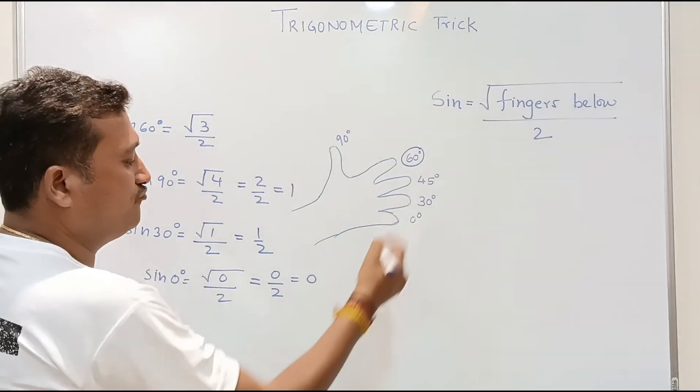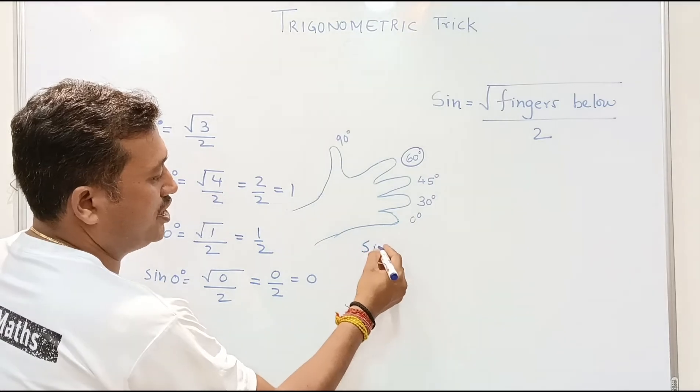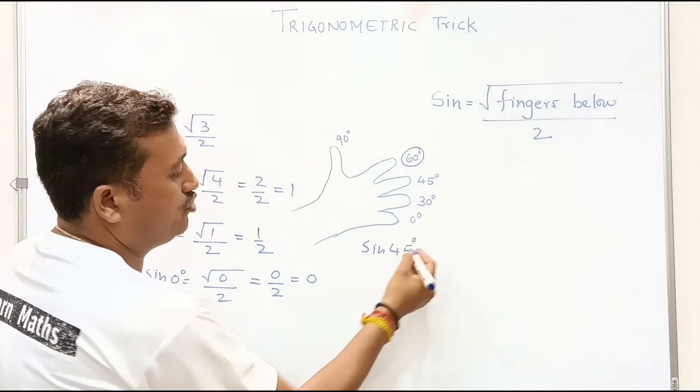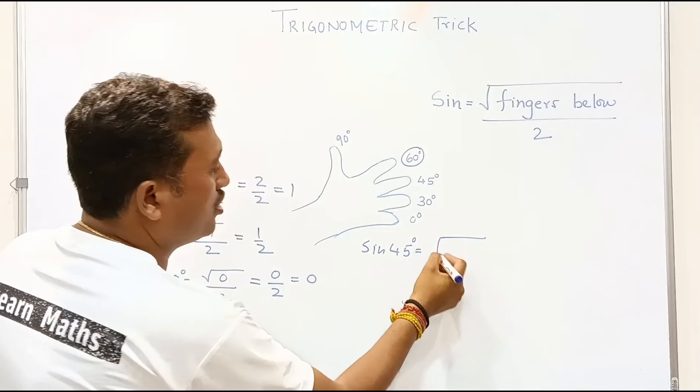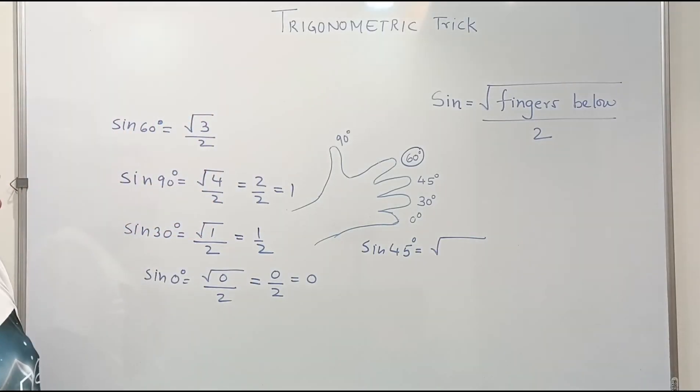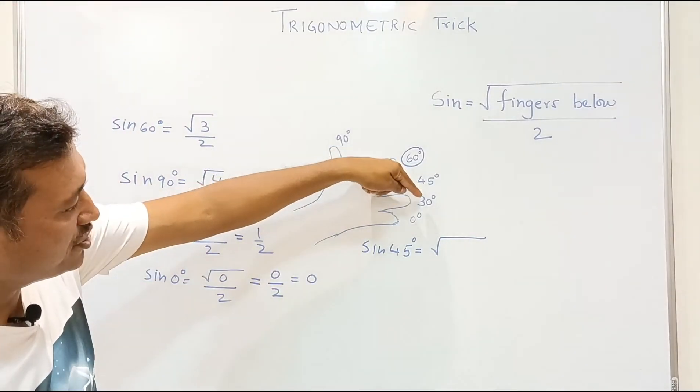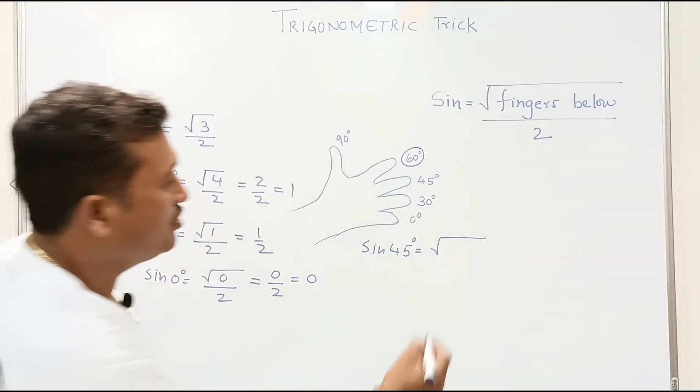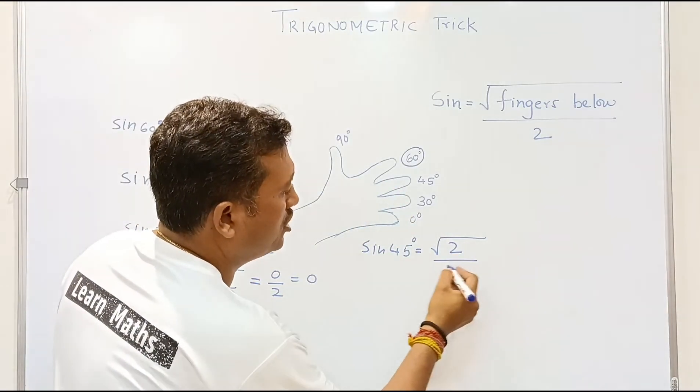Similarly, we can find sine 45 degrees. Sine 45 degrees equals square root of fingers below. How many fingers can you see below 45 degrees? There are two fingers. So root 2 over 2.